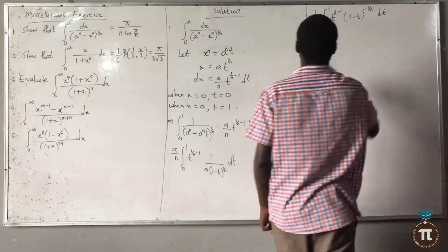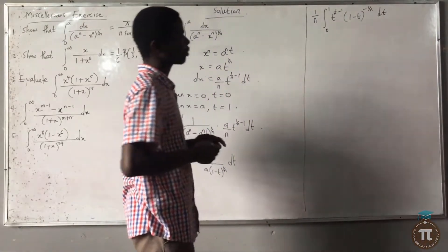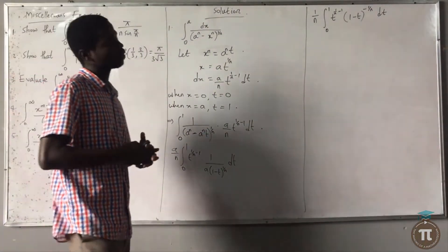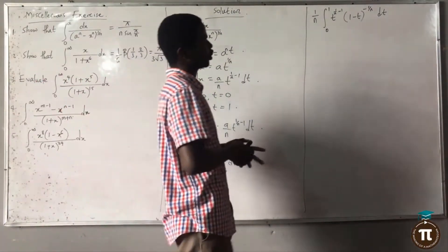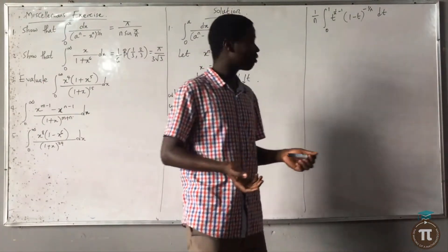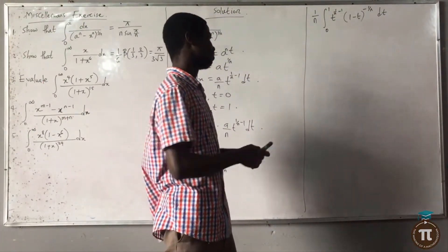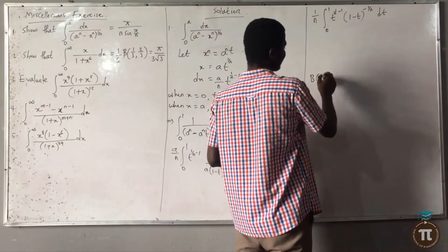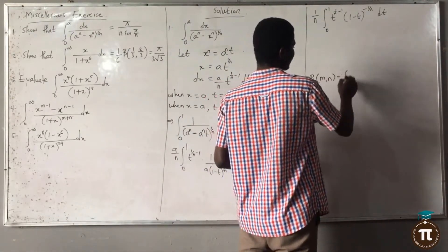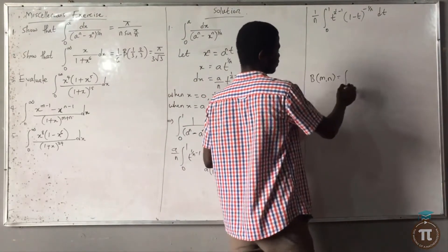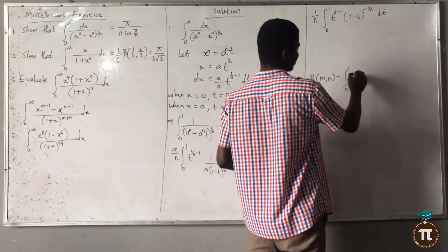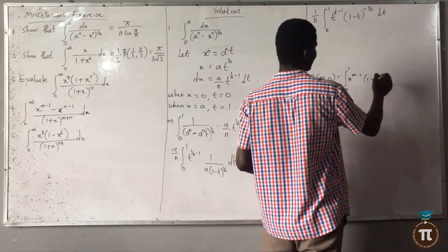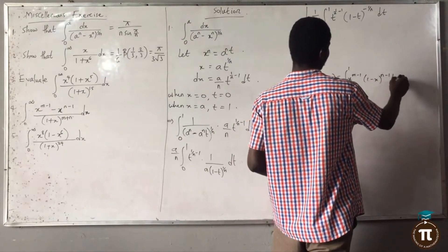This next step uses the definition of the beta function — specifically the polynomial definition. Beta(m, n) equals the integral from 0 to 1 of s^(m-1) times (1 minus s)^(n-1) ds.